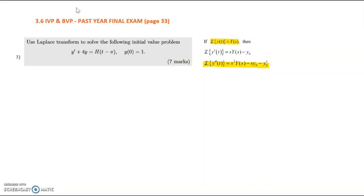This condition y(0) equals 1 simply means y-naught equals 1. The first step in solving the IVP using Laplace is to rewrite the equation in terms of Laplace. So we have Laplace of y' plus 4 times Laplace of y equals, on the right-hand side, Laplace of H(t minus π).